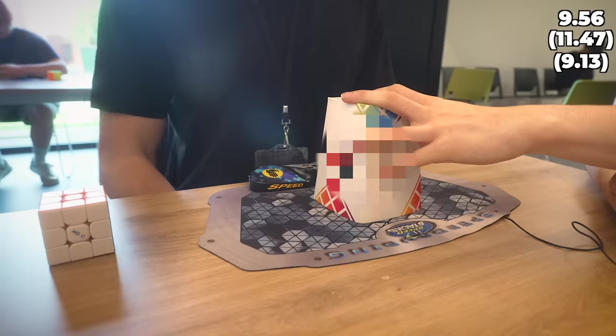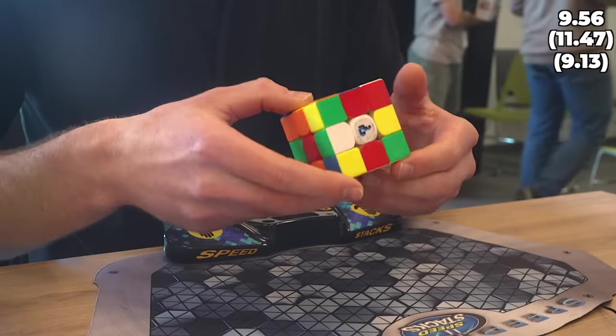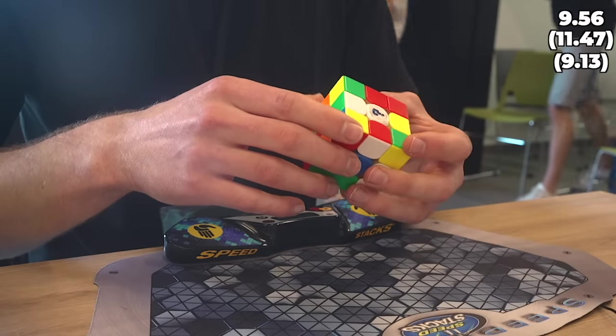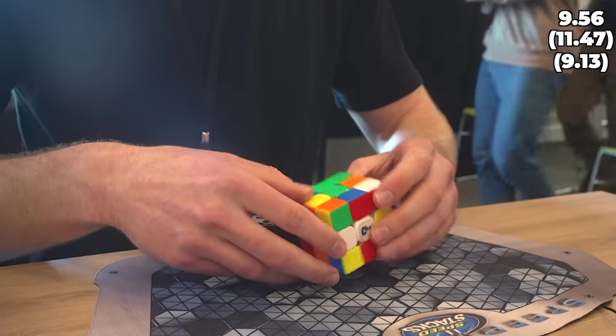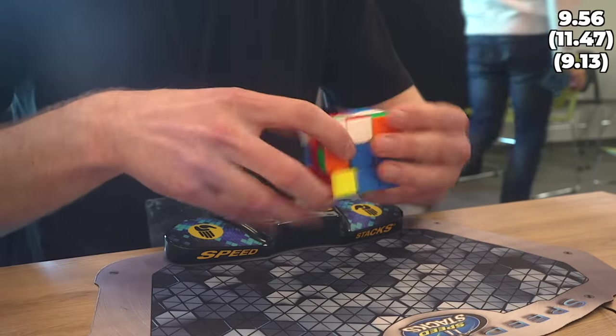For the first round I really wanted to have a low nine second average because at home I average under nine seconds but for some reason I always mess up at competitions. Once again expecting yellow cross, I think I found a solution pretty easily.